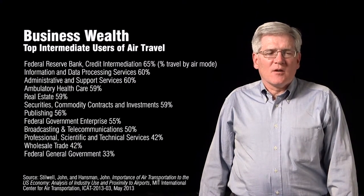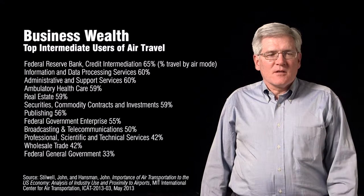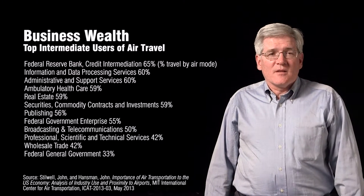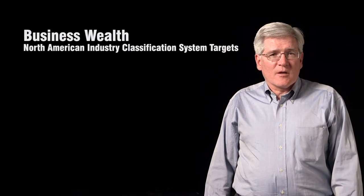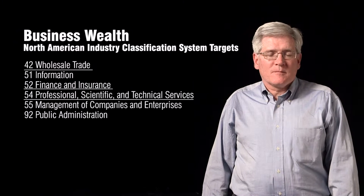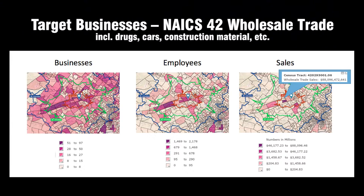MIT did a study on which industries have the highest propensity for air travel compared to trains and automobiles. Now that we've identified these industries, we can use U.S. Census data — the North American Industry Classification System — to actually identify on maps where these businesses are located. We'll focus on three: wholesale trade, finance and insurance, and professional services. For wholesale trade, you can see in three different maps — number of businesses, number of employees, or sales by zip code — a concentration around the blue dot we selected for this study of where to site a new airfield. This looks like a nice concentration right exactly where we placed our marker.